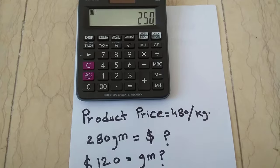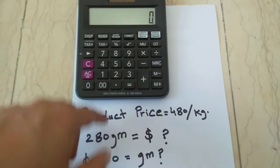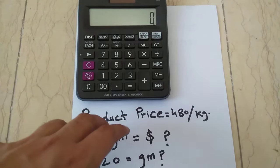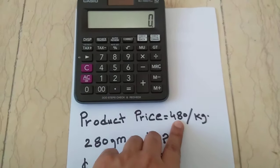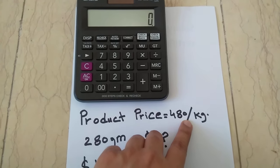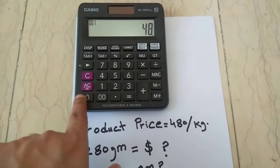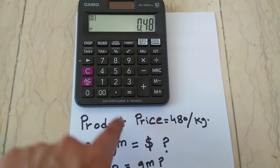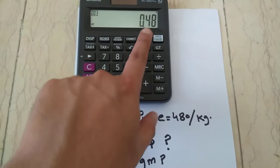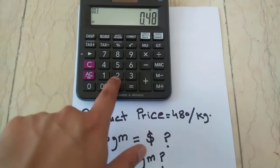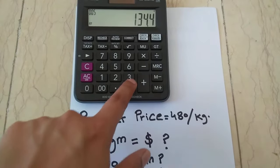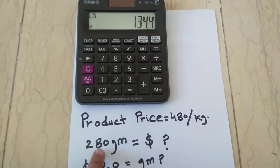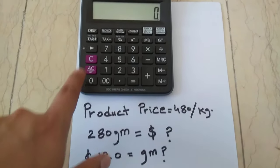This is a very simple technique. In the first step, if you want to know how many dollars to spend for a certain number of grams, divide the total value of the product by 1000 — so 480 divided by 1000 equals 0.48 — then multiply 0.48 by 280 grams, giving you 134. So you spend 134 to get 280 grams.